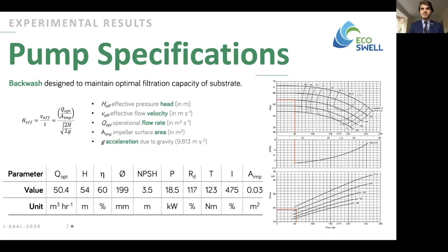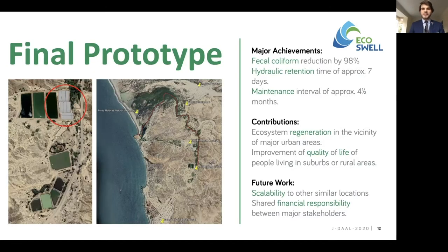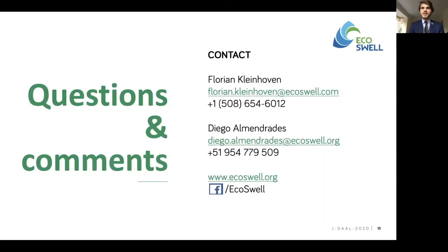The pump capacity was computed as a function of effective pressure head, flow velocity, flow rate, and impeller surface area. The minimum maintenance interval is no less than four and a half months for desludging, with four to five weeks between pruning the vetiver. This solution will contribute to ecosystem regeneration near major urban areas and improve habitat quality for people and wildlife. In the future, we hope this system can be expanded to other treatment systems facing similar problems in the region and country. These are some useful references — please feel free to reach out.